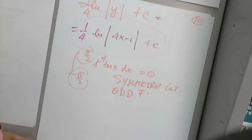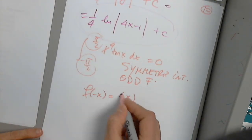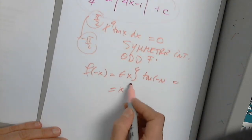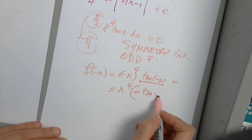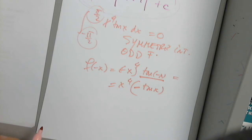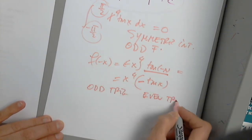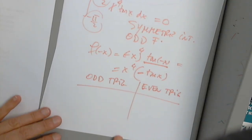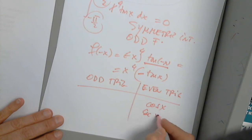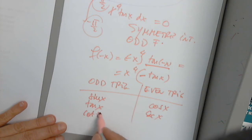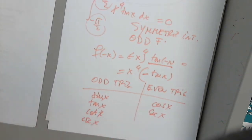x⁴ is even. When you plug in negative x, you get (−x)⁴ · tan(−x). The (−x)⁴ = x⁴ doesn't change, but tan(−x) = −tan(x). From the trig functions, only cosine and secant are even; everything else — sine, tangent, cotangent, cosecant — is odd.